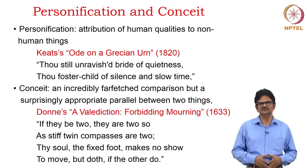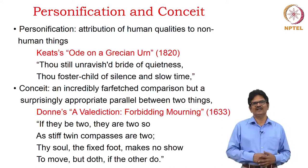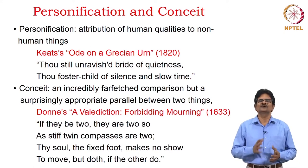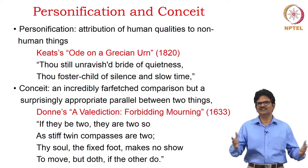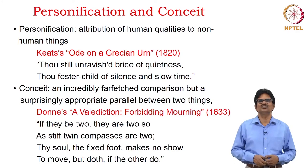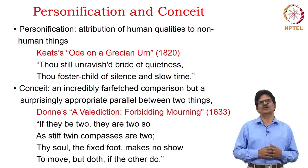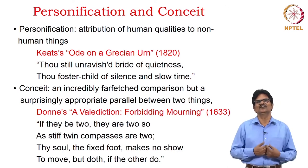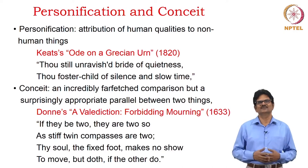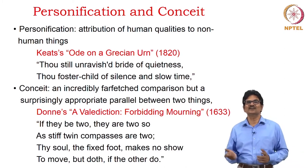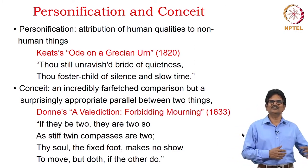We come to a common figure of thought: personification. We will also look at conceit, which can be used in the context of metaphors, simile, and everything else. Personification is an attribution of human qualities to non-human things. In Keats's 'Ode on a Grecian Urn,' we find the poet attributing human qualities to the urn. He says: 'Thou still unravished bride of quietness, thou foster'd child of silence and slow time.'